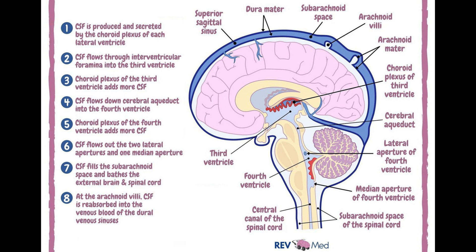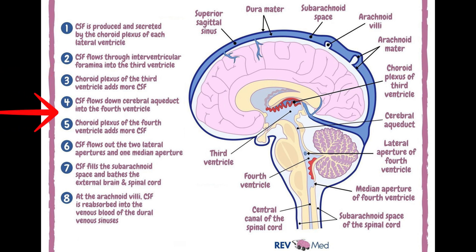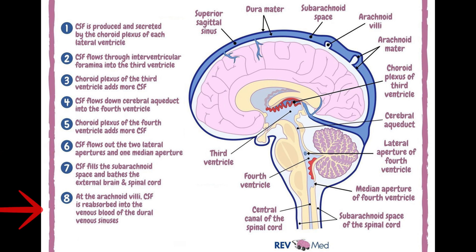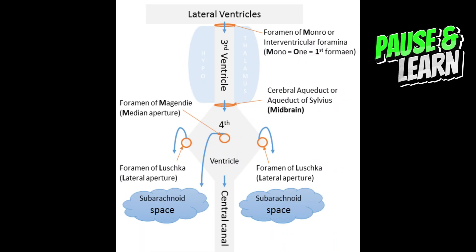CSF flows unidirectionally from the lateral ventricles to the third ventricle via the foramen of Monro, passing through the aqueduct of Sylvius to the fourth ventricle. Finally, it enters the subarachnoid spaces via two lateral foramina of Luschka and one median foramen called Magendie. After that, it is reabsorbed into the venous system via arachnoid granulations. Here is a simplified flowchart for your better learning.